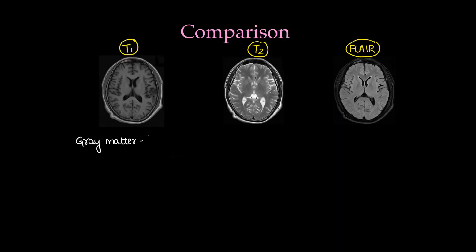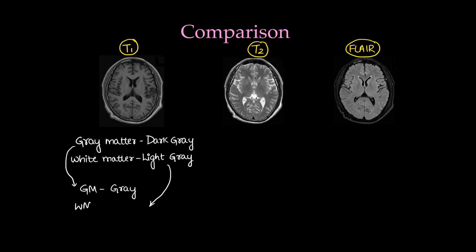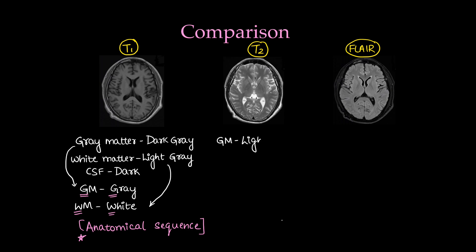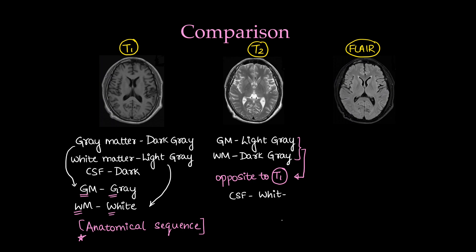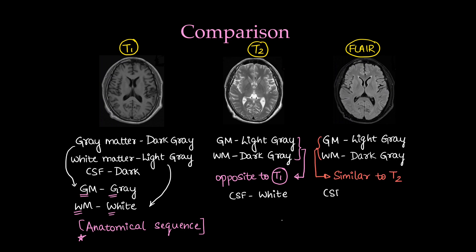Briefly comparing all sequences: on T1, gray matter is dark gray and white matter is light gray — gray for gray, white for white. T1 is the most anatomical sequence, used to visualize anatomy, and CSF is dark. On T2, gray matter is light gray and white matter is dark gray — opposite to T1 — and CSF is white. FLAIR is similar to T2 except CSF is dark. FLAIR stands for Fluid Attenuated Inversion Recovery.